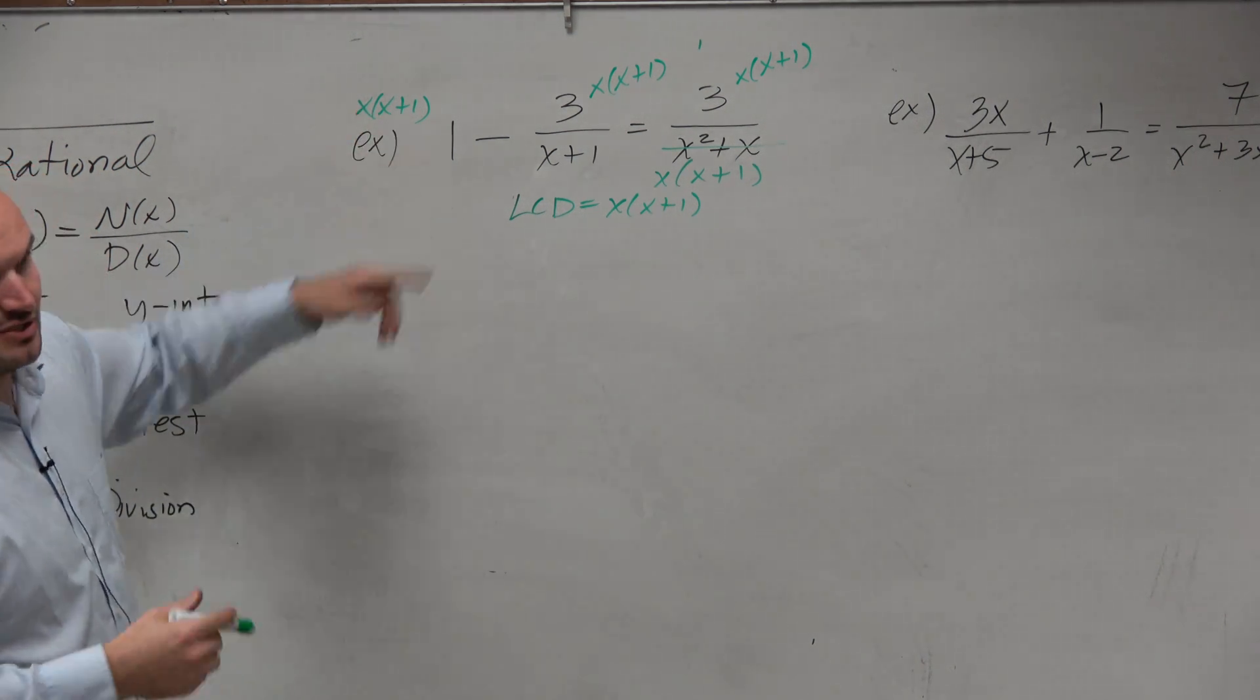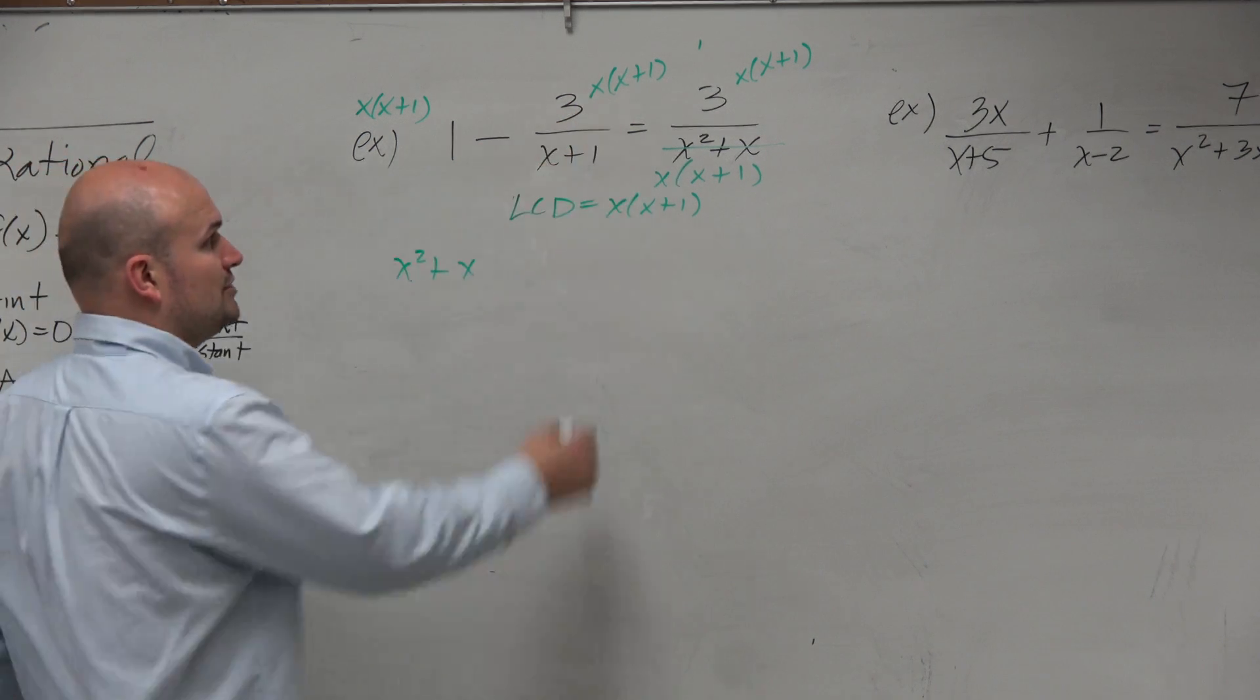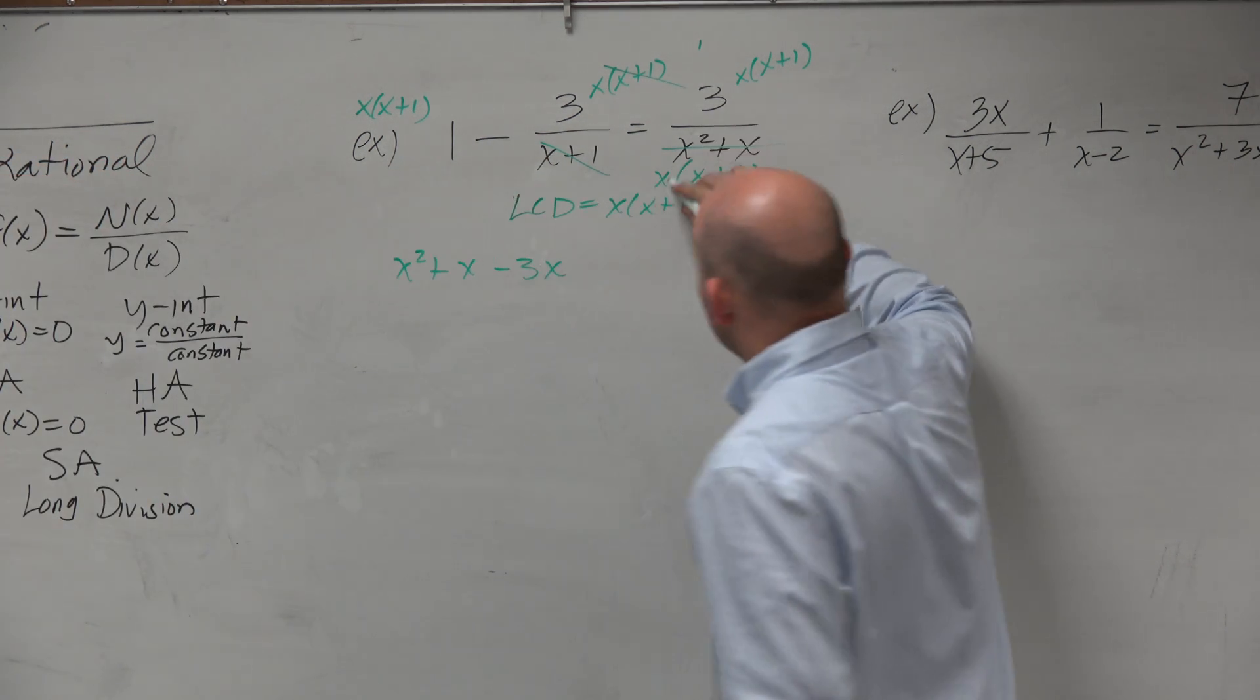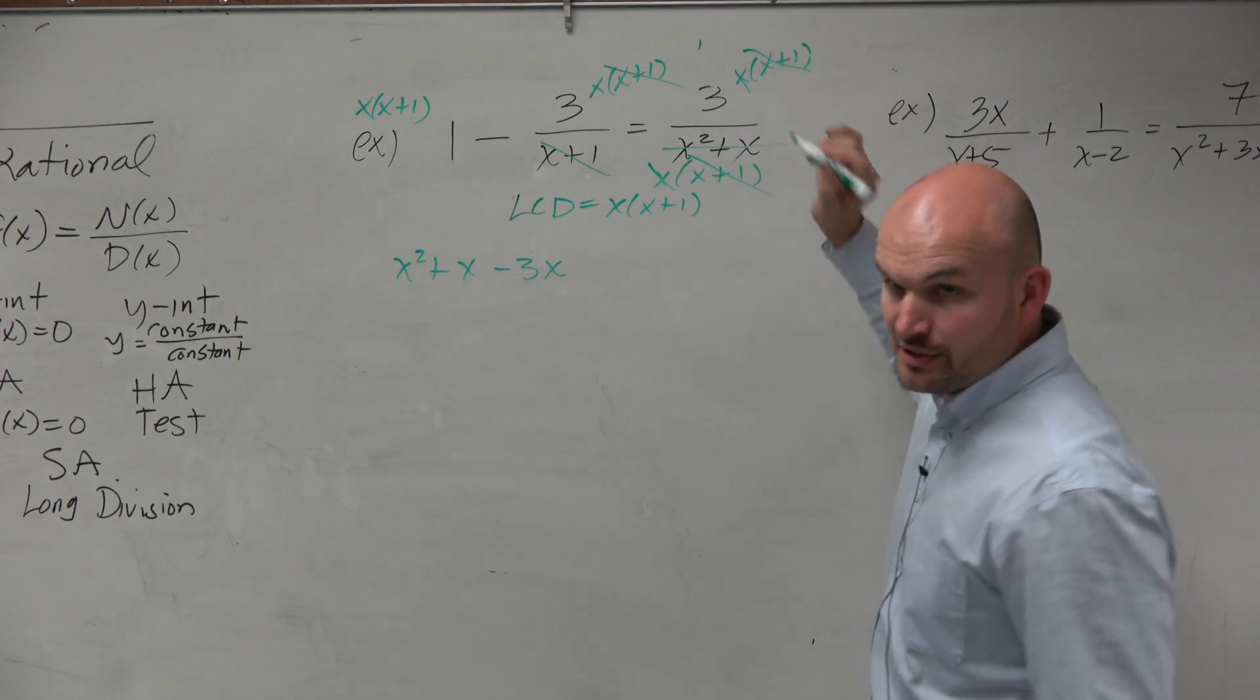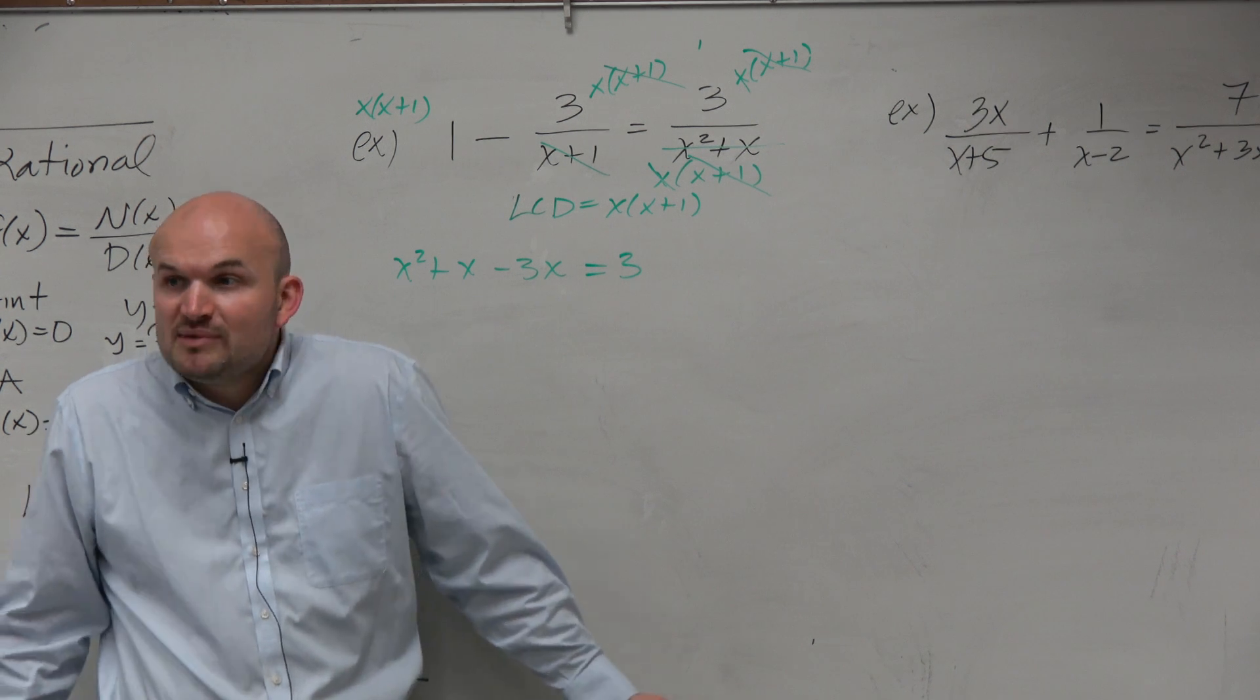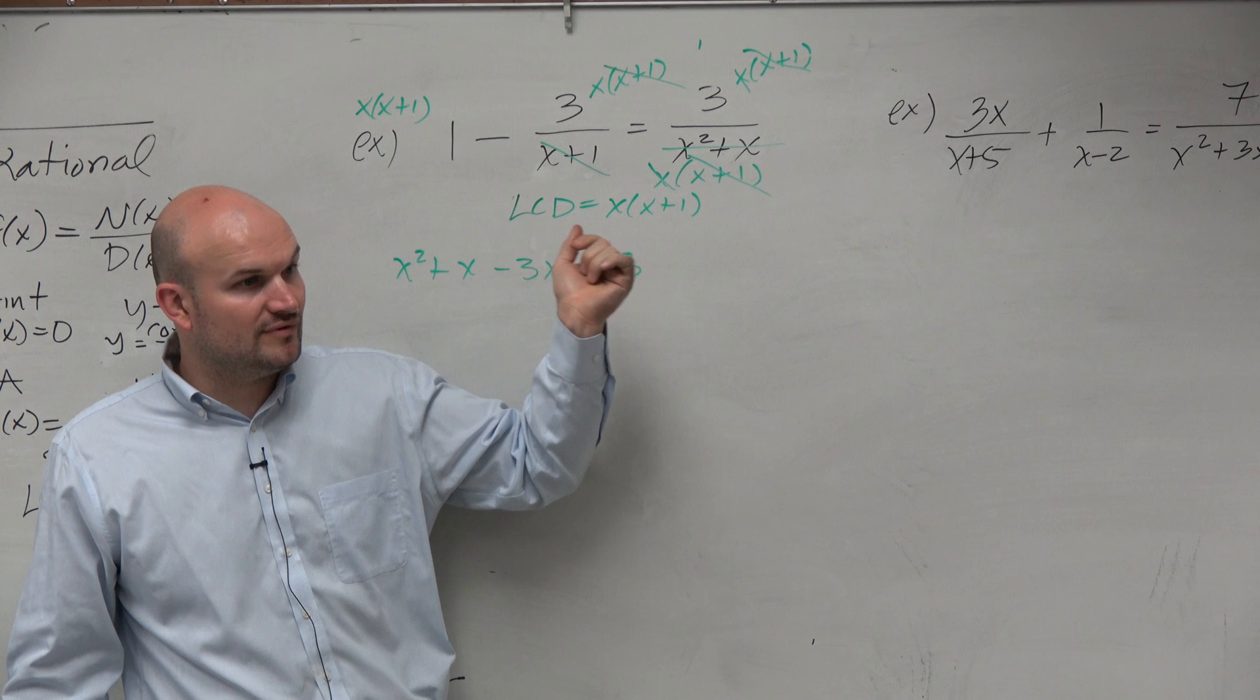There's no denominator here. This is just x times x plus 1, which is really x squared plus x. I can distribute that back through. Here, numerator, denominator. Wouldn't you guys agree the x plus 1 is divided out? So I'm just left with negative 3x. Over here, wouldn't you guys agree that the x is in the denominator and the numerator divide out? The x plus 1 is in the denominator and the numerator divide out, and I'm just left with 3. I got rid of my fractions by multiplying by this LCD. So if you still have fractions, you don't have the correct LCD. You might want to go back and revisit.